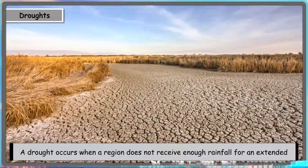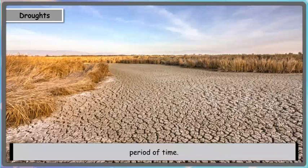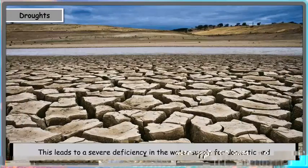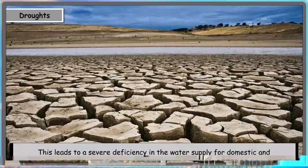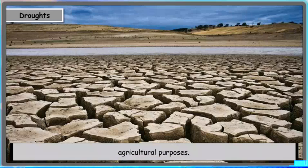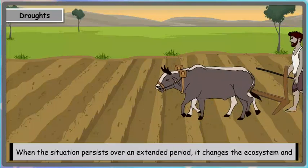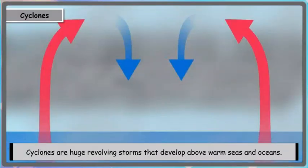A drought occurs when a region does not receive enough rainfall for an extended period of time. This leads to a severe deficiency in the water supply for domestic and agricultural purposes. When the situation persists over an extended period of time, it can have severe consequences.